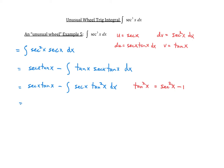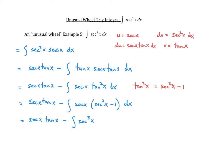When I make that substitution, I get secant x tangent x minus the integral of secant x times (secant squared x minus one) dx. Then distributing inside the integral gives secant x tangent x minus the integral of secant cubed x minus secant x dx.